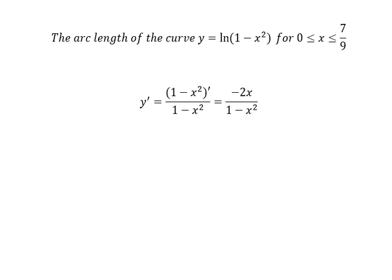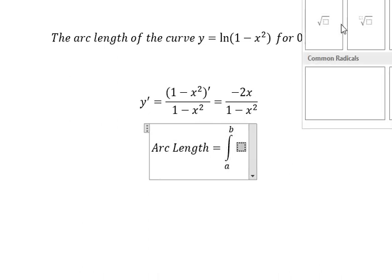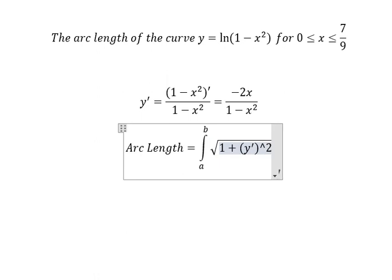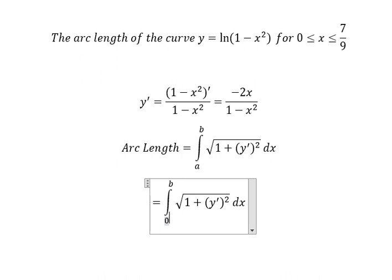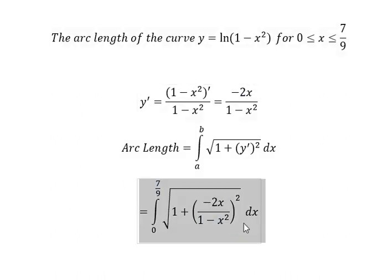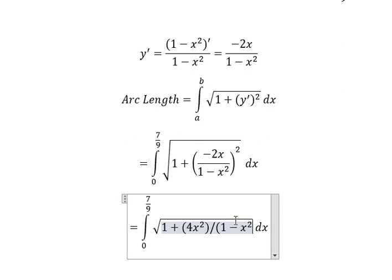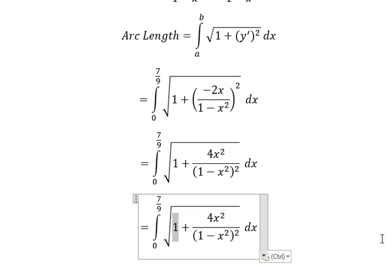Now we can apply the formula here. We have a equal to zero and b equal to 7/9. This expression goes in here, and we have 4x² over (1 - x²), everything to the power of two.